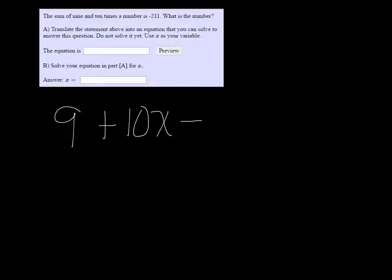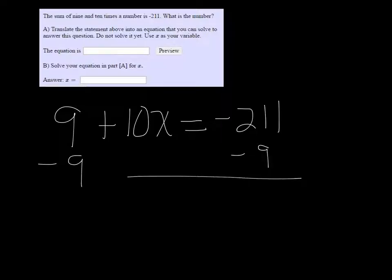This equals negative 211. So if I subtract 9 on both sides, I get 10x is equal to negative 220.